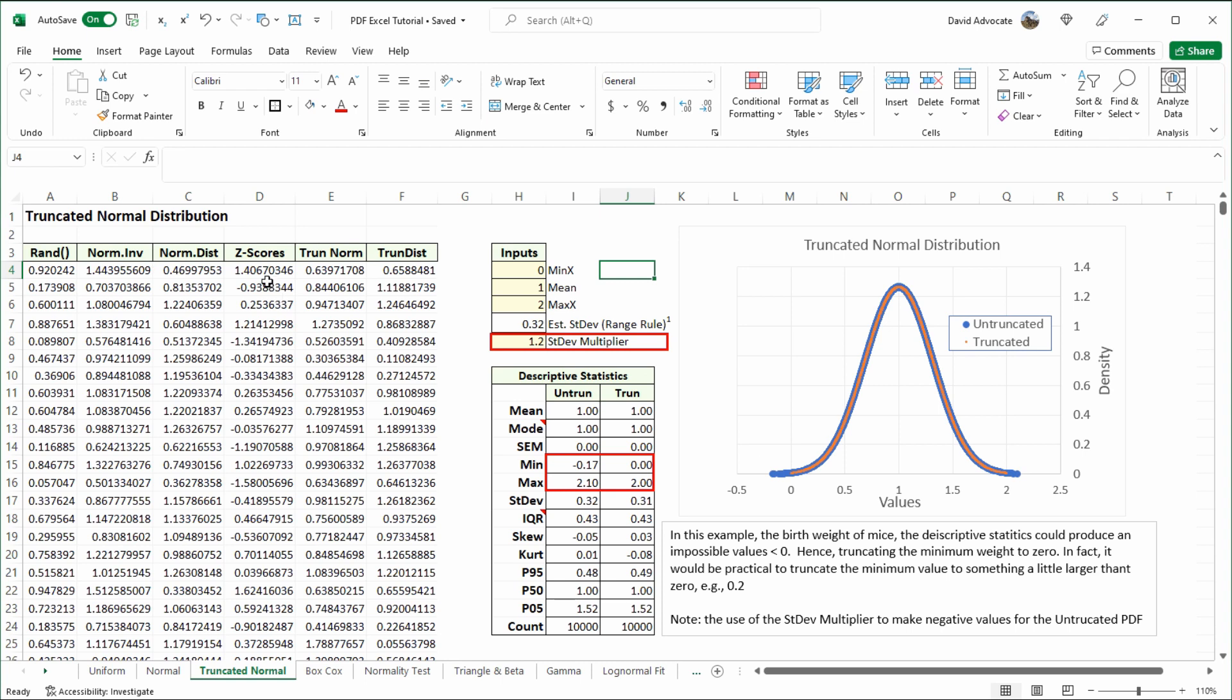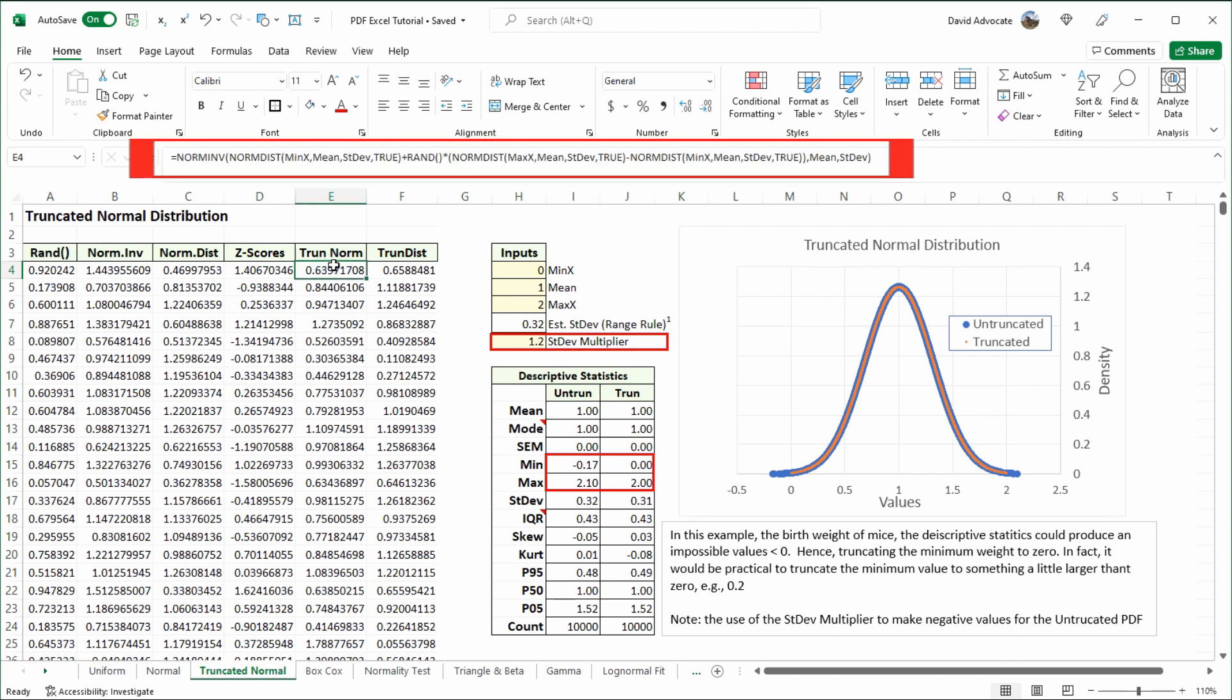I've calculated out some z-scores. And here's where I implement the truncated normal distribution. And here's where I do the truncated dist,